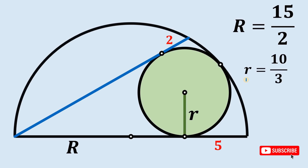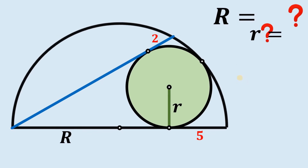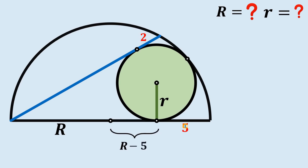Now the real question is: what is the solution? So let's begin. To answer this kind of question, we're going to use two different equations that contain capital R and small r. Let's start with the obvious. From this center to this point, we know this is capital R. And from this point to the point of tangency, this is just R minus 5. Now if we connect the center of the semicircle, the center of the circle, and the point of tangency, they create a straight line.